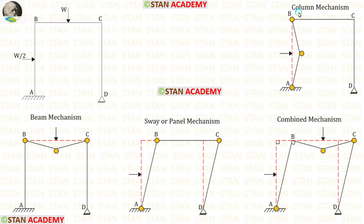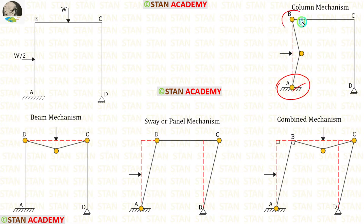First let us see the column mechanism. At point A we have a fixed support, so there will be a plastic hinge. At joint B we will have a plastic hinge. The third plastic hinge will occur on the right of the point load.